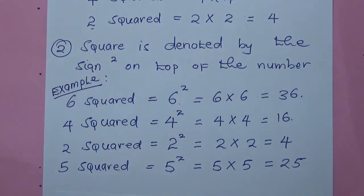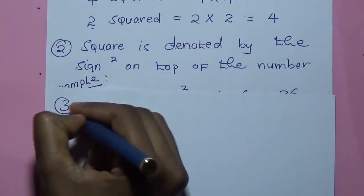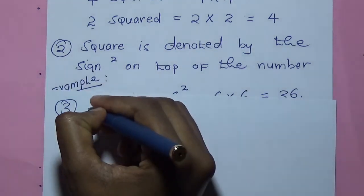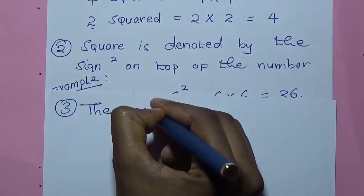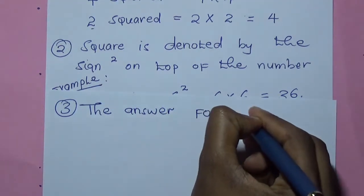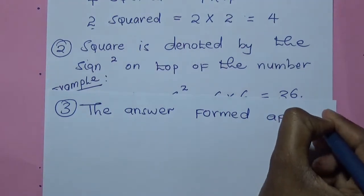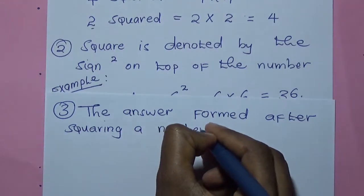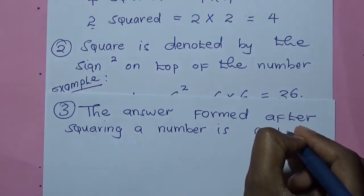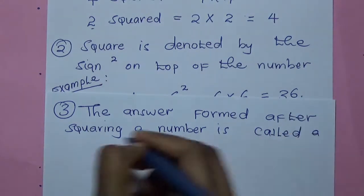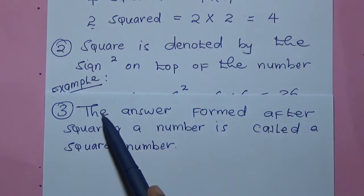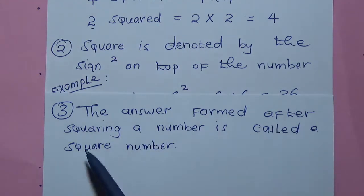The third point I want you to understand is the number you get after squaring a number, or the answer you get. The answer formed after squaring a number is called a square number.